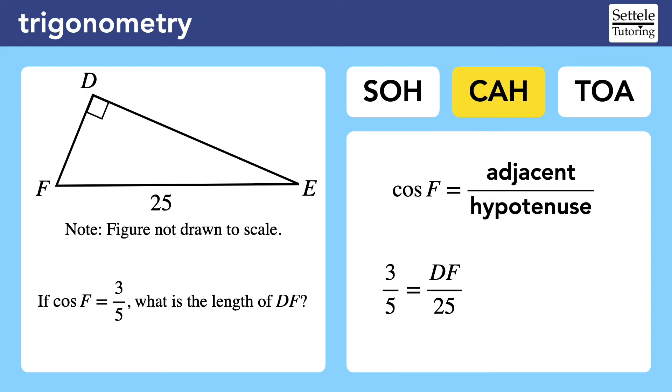We can merge our two cosine equations to solve for the missing side because 3 fifths is actually a reduced form of the fraction we would make with the sides. Once we've set up the ratio, we can cross multiply and divide. 3 times 25 is 75, which is equal to 5 times DF. Divide by 5 to get that DF is 15.